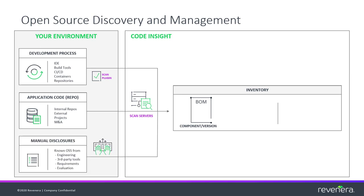A third way to add items to inventory is via a manual disclosure process. Some customers will utilize this as a sort of check and balance between expected open source components and what is discovered during a scan. For example, engineering says they are going to be using components A, B, and C, and after a scan, you find A, B, and D. So there could be an investigation as to why there is this disconnect.